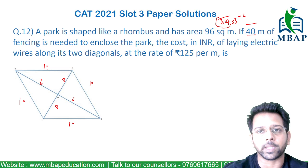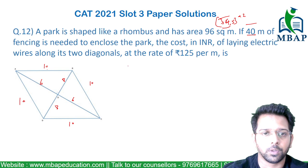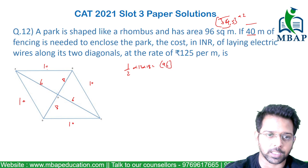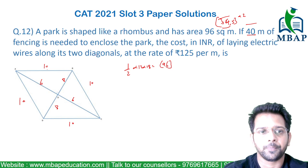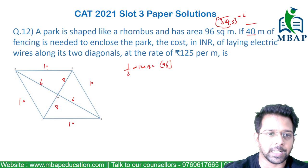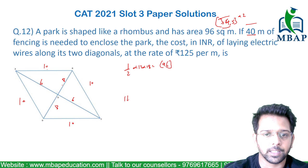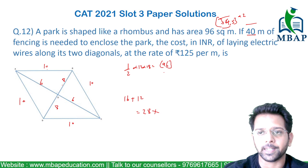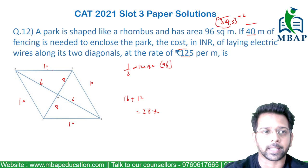Let's verify: half times 12 into 16 — that comes out to 96, confirming the dimensions are correct. The full length of the two diagonals is 8 plus 8 equals 16, and 6 plus 6 equals 12. So the total combined diagonal length is 16 plus 12, which equals 28 meters.